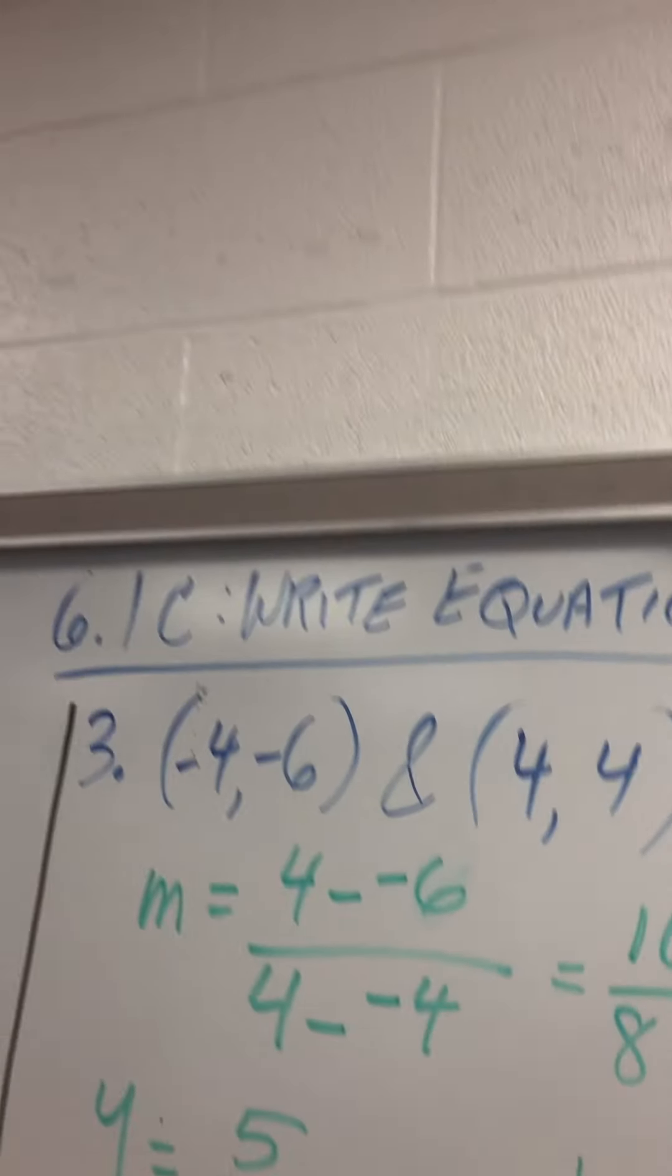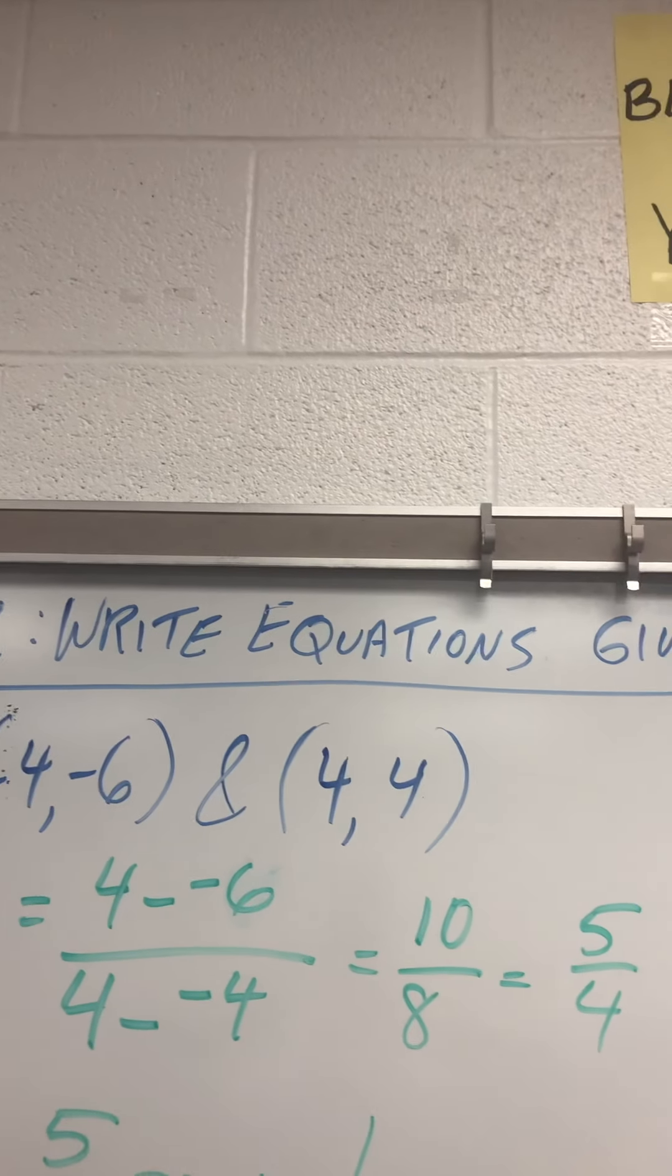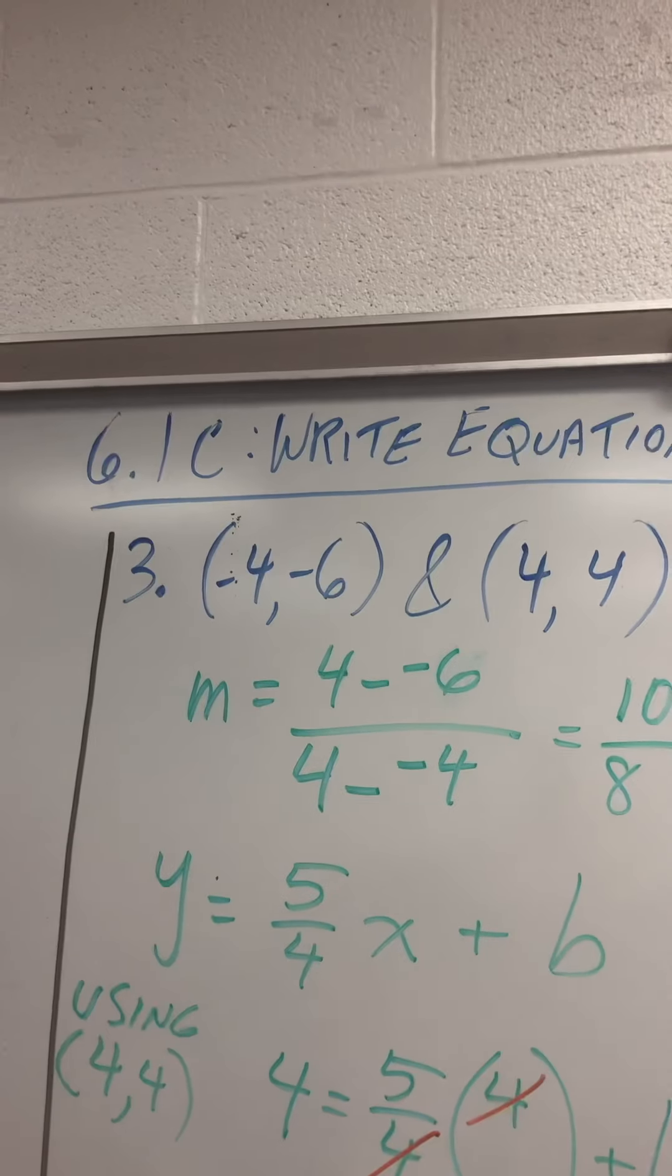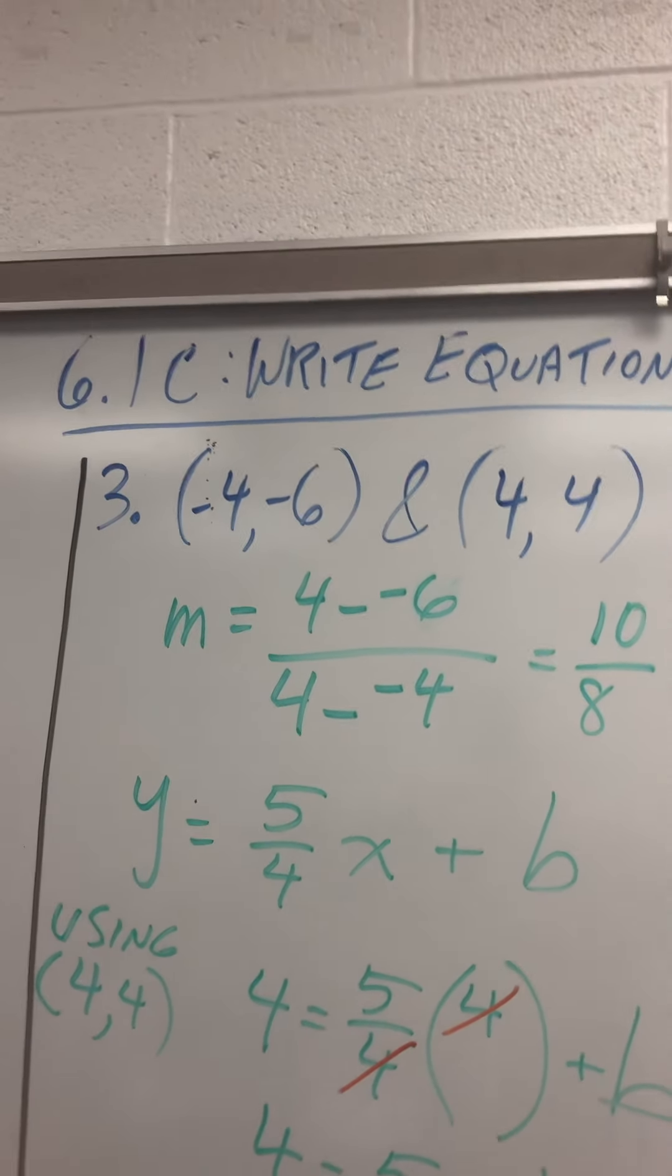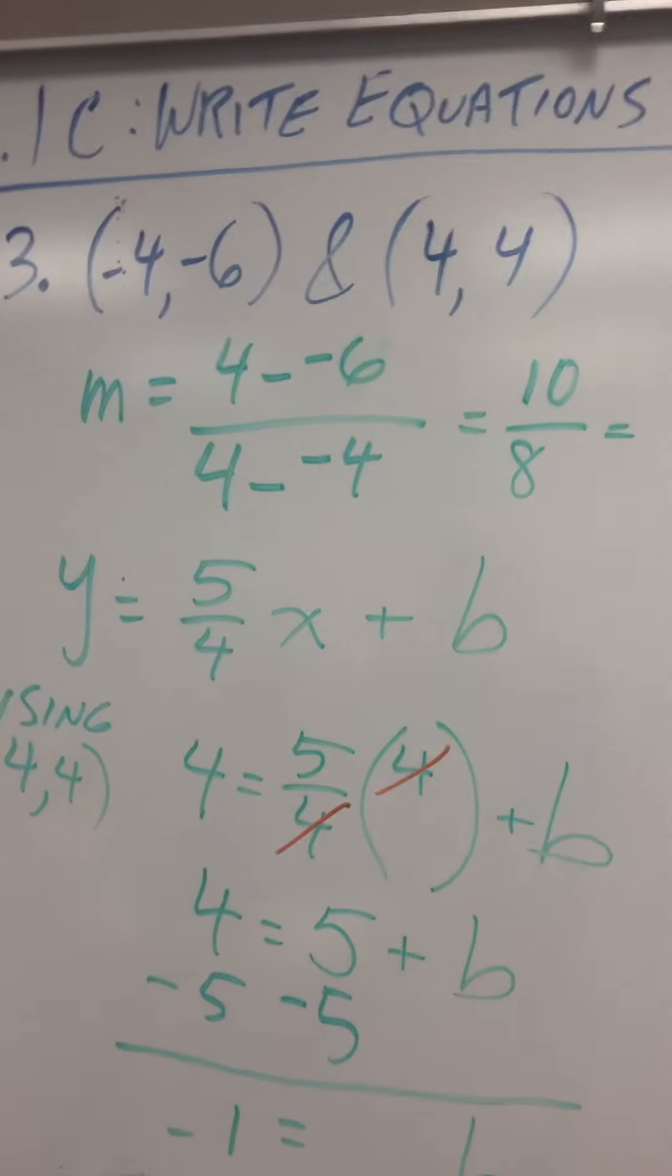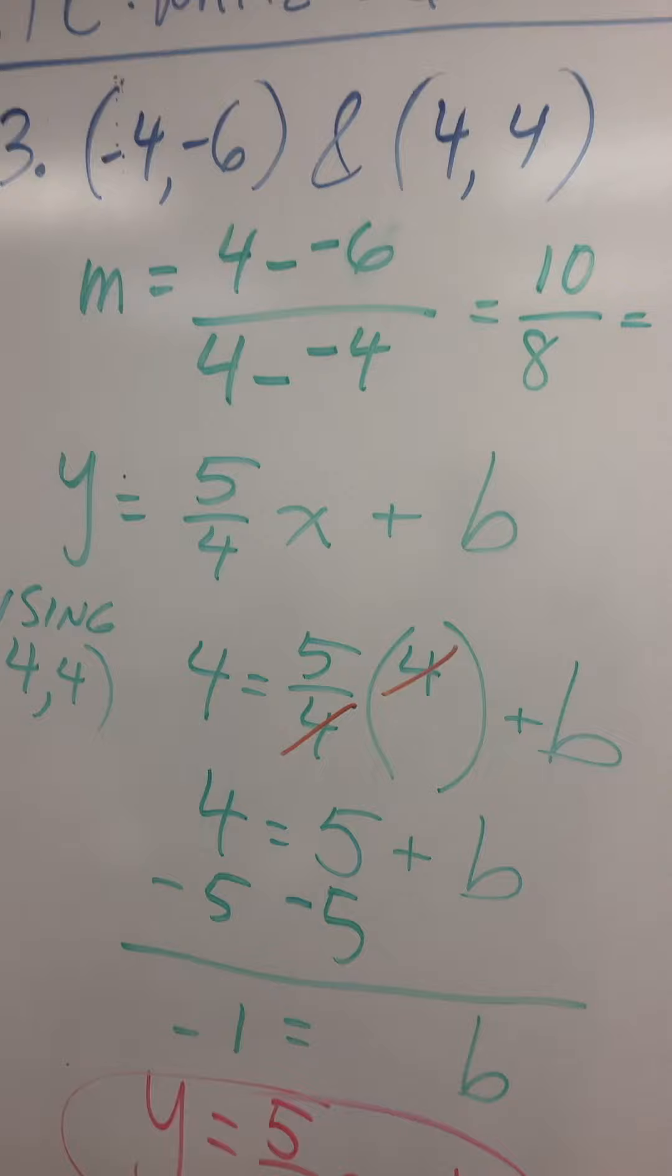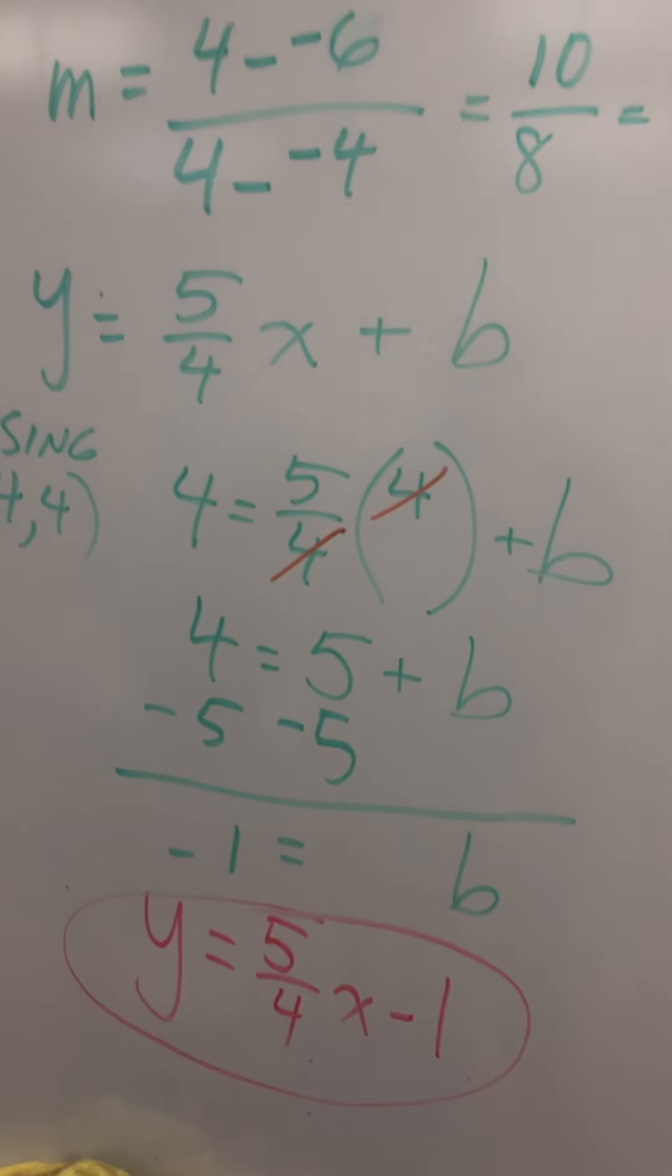Here I'm going to do 4 minus negative 6 over 4 minus negative 4. 10 over 8 reduces to 5 over 4. Y equals 5 over 4 x plus b. Using 4, 4, you'll see the 4's will cancel there, leaving me with 4 equals 5 plus b minus 5 from both sides. B equals negative 1, so y equals 5 fourths x minus 1.